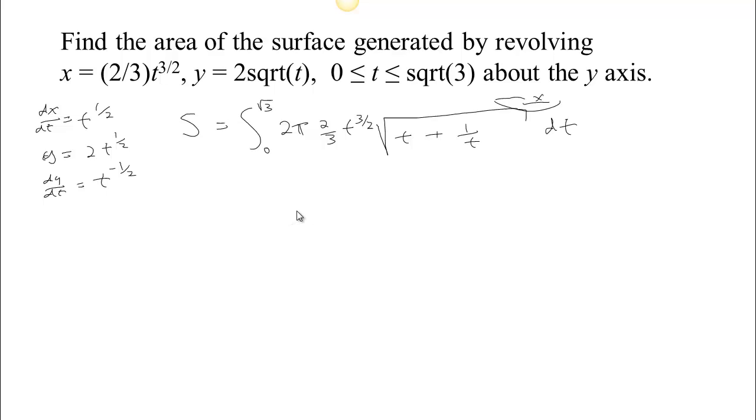So all we have to do is to do this integral. 2 pi times 2 thirds t to the 3 halves. What I want to do is, I hate having that 1 over t underneath this root. So what I'm going to do is I'm going to factor out 1 over t from both terms. If I do that, if you factor 1 over t out of this term, you get t squared. If you factor 1 over t out of this term, you get plus 1. My plan here is to pull that out.